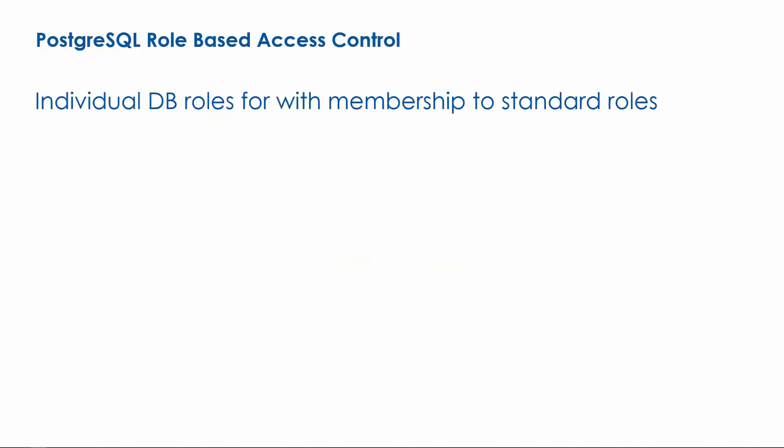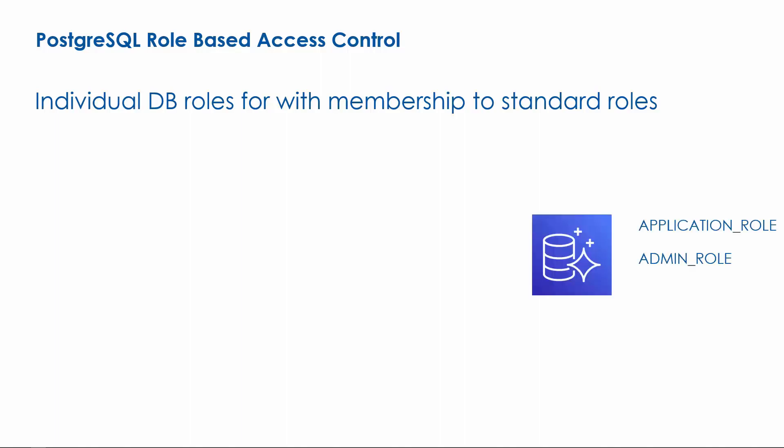In a typical Postgres setup, permissions are managed by way of standard roles. In a simple scenario, there may be only three roles: one for application, another for admins, and a third for support. Each of these standard roles will be granted appropriate permissions for the database objects.